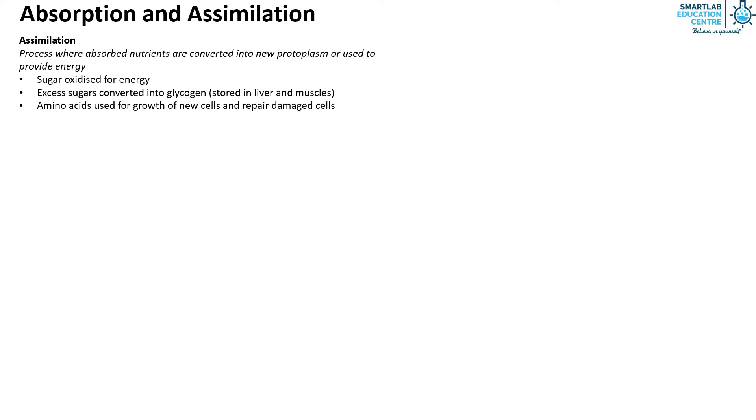Now let's look at assimilation. Assimilation is the process where absorbed nutrients are converted into new protoplasm or used to provide energy. Sugars are oxidized for energy, and excess sugars are converted into glycogen stored in liver and muscles. Amino acids are used for growth of new cells and repair of damaged cells, and excess amino acids are deaminated to form urea. Fats can be oxidized for energy, and excess fats are stored in adipose tissues.